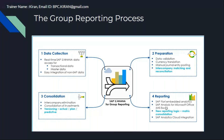In data collection, you have different sources — master data and transaction data. You create legal entities and companies — called consolidation units here. You maintain a group chart of accounts or consolidation chart of accounts, transaction types, and if customers want profit centers or segments, you maintain that data. Data collection means real-time SAP S4 HANA data access for transaction data and master data. Whatever is in the universal journal table is available for group reporting — you just execute a release.